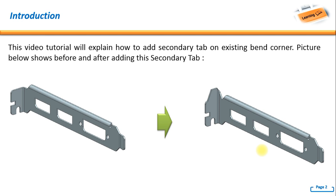Hello, welcome back again to NX tutorial. In this video tutorial, I will explain how to add a secondary tab on an existing bent corner. The picture below shows before and after adding this secondary tab. Notice that before, we don't yet have any additional geometry, but after adding it, we have additional geometry that is lying on the bent corner.